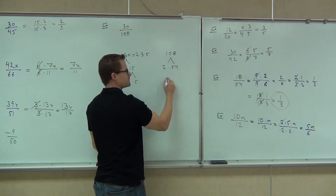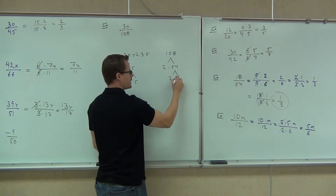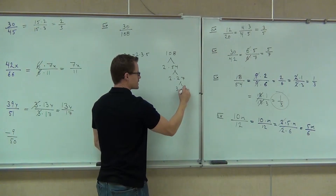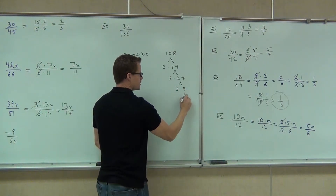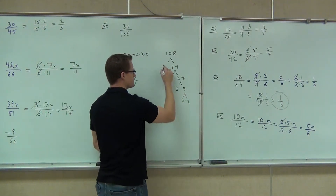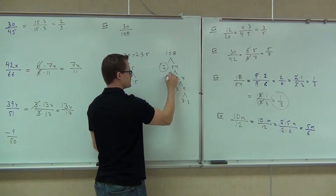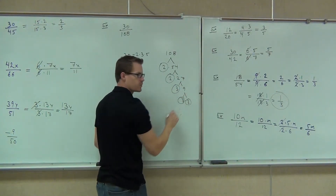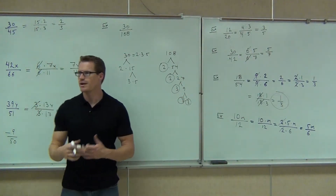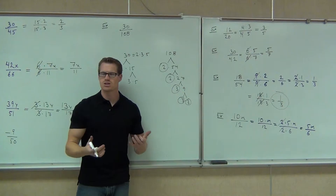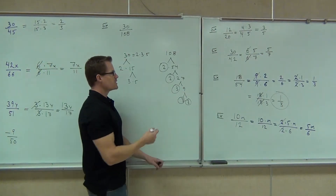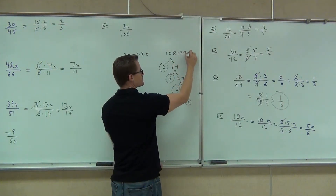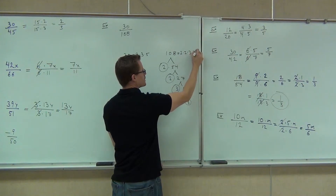I know that's 54. I know that's 27. I know that's 3 times 9. I know that's 3 times 3. I know I did that very fast, but we've done this already, so you should know how to get that prime factorization. So we know that 108 is 2 times 2 times 3 times 3 times 3.